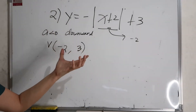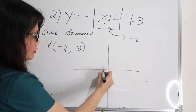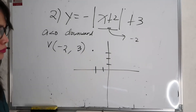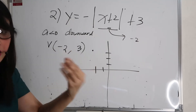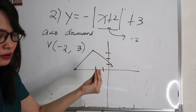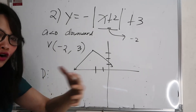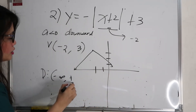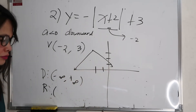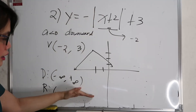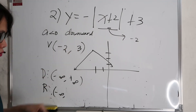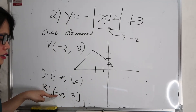The k value is the constant outside the absolute value, which is 3. So the vertex is at (negative 2, 3). We plot that point and draw the V-shape opening downward, with x equals negative 2 as the axis of symmetry. The domain is still the set of all real numbers, from negative infinity to positive infinity. Since the graph opens downward with vertex at y equals 3, the range is from negative infinity to 3.